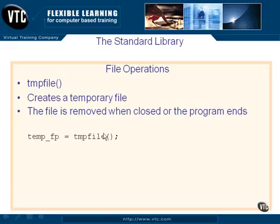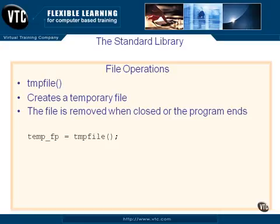Tmpfile will create a temporary file, and that file will be removed when the program closes or if you do an F-Close on this temporary file pointer. You don't really care about the name of the file — it's just a temp file that will be created on the file system for you. You can use it as a scratch pad, whatever you want to call it, and then you close it when you're done.